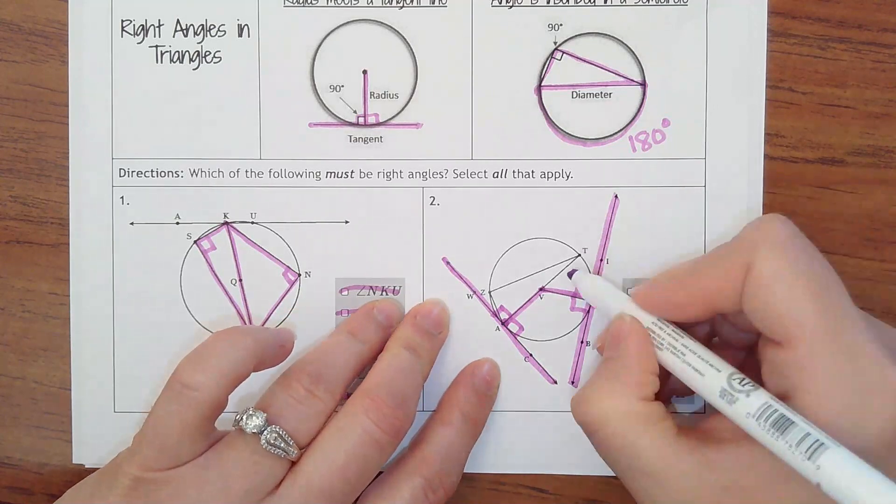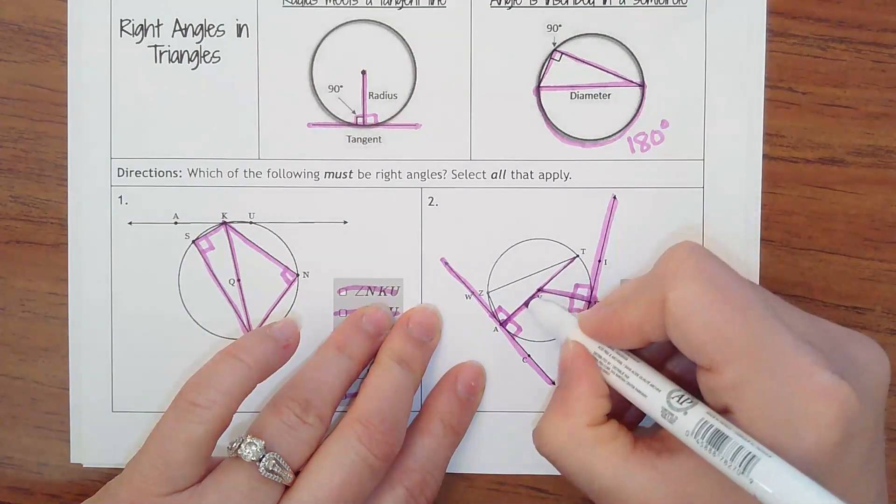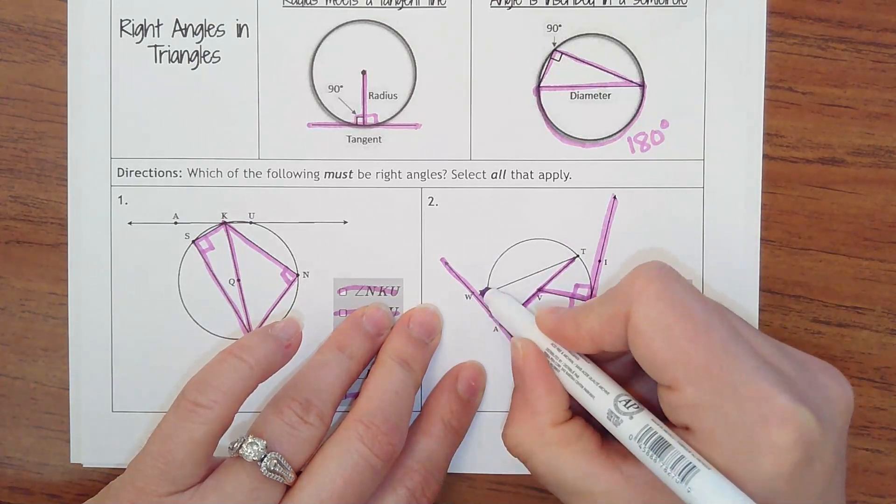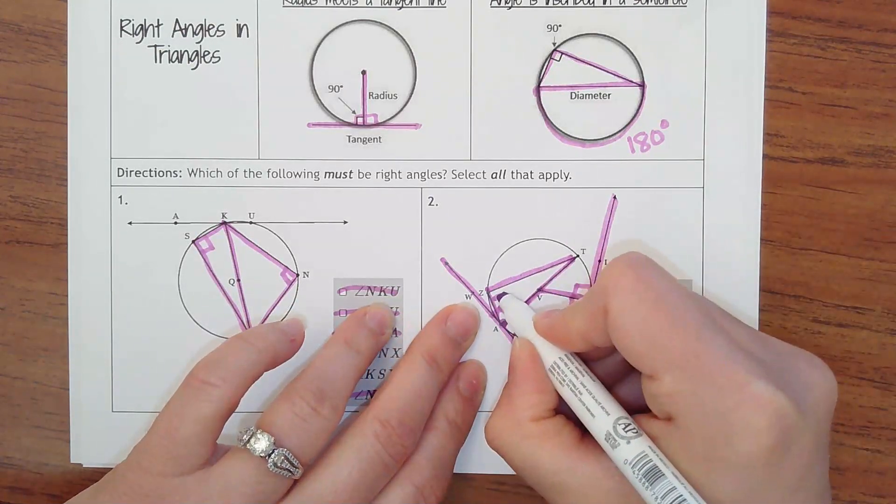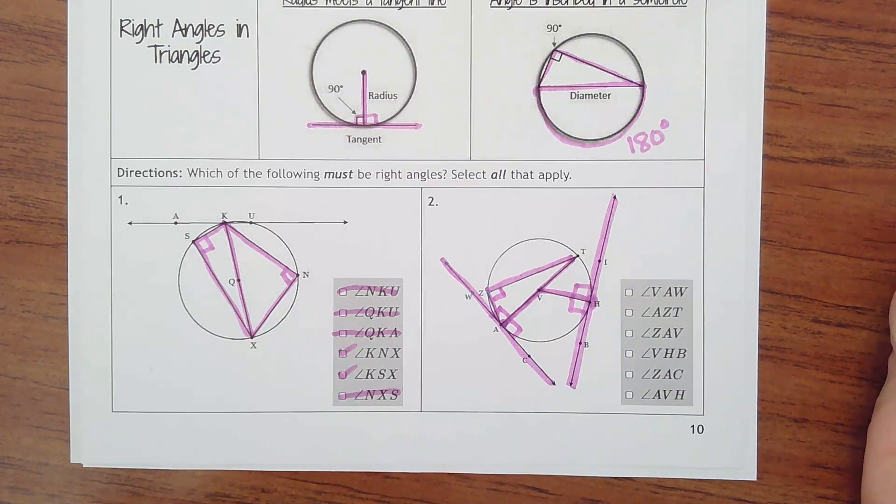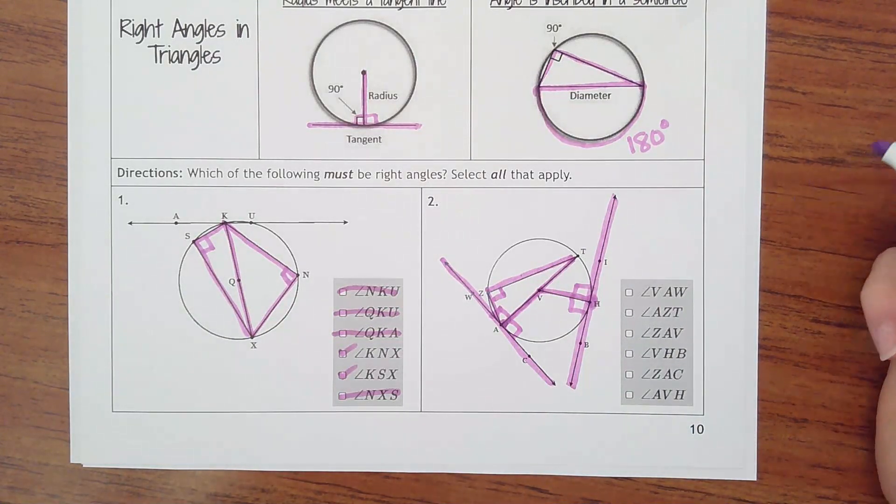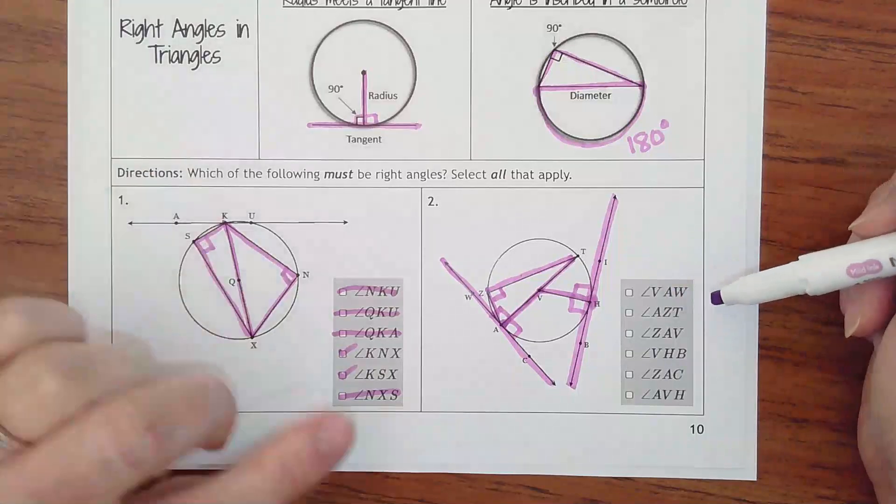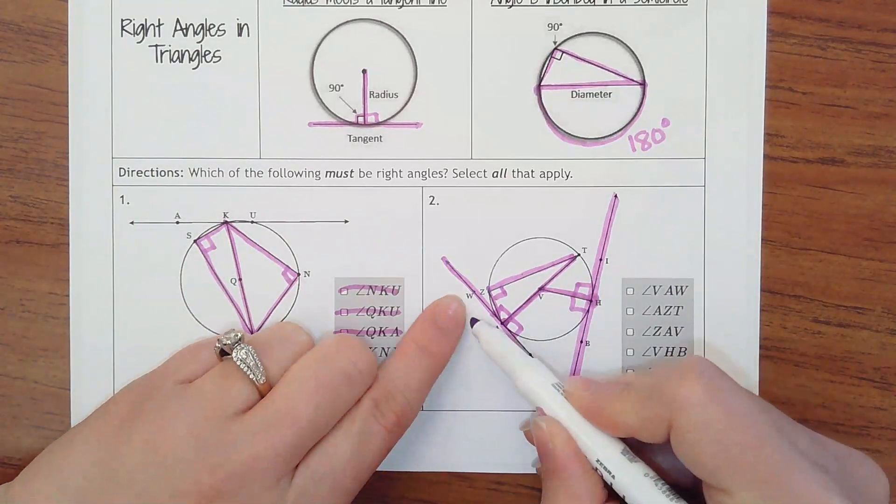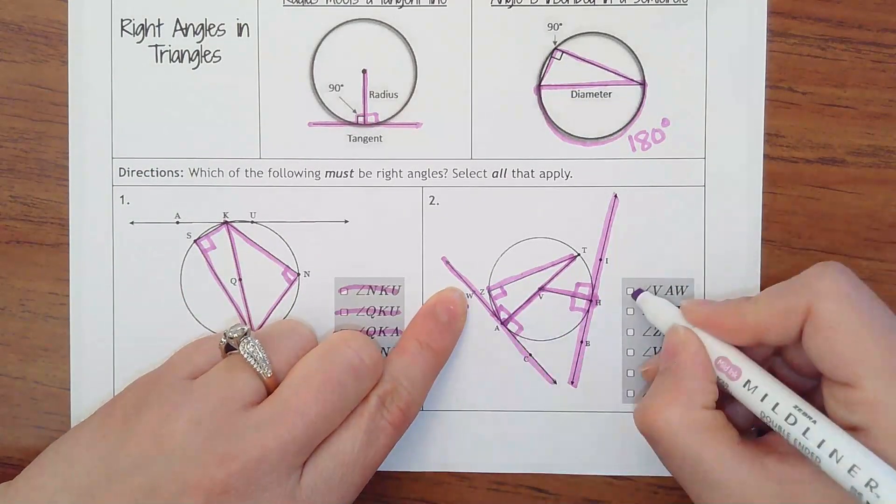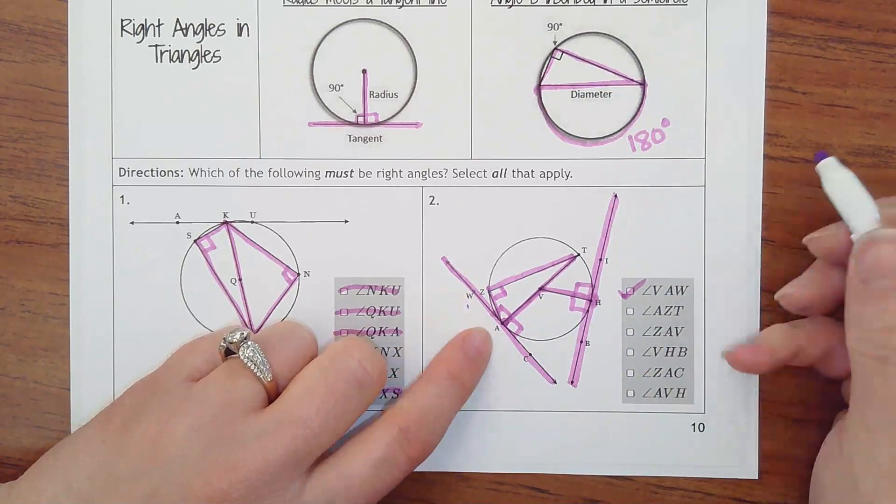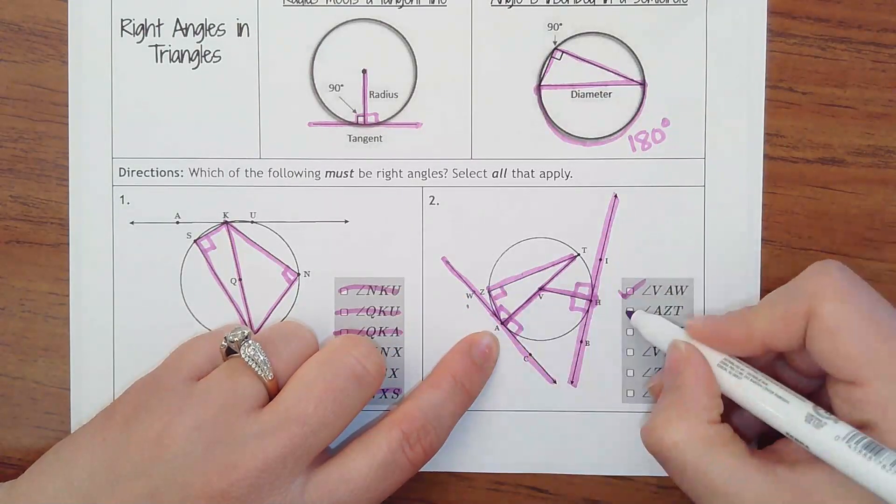I also see a diameter with this triangle. So here at Z would be a right angle. So there should be five different ones. Let's look through our options. Angle VAW, V A out to W. Yes. AZT, A Z T. Yes.